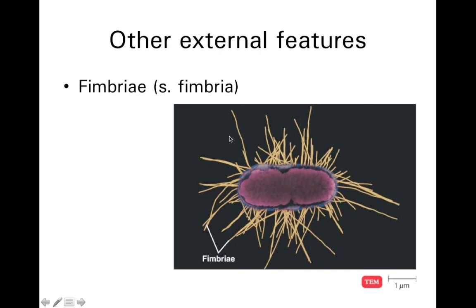Fimbriae comes from the Latin word that means fringe. Fimbriae look kind of like cilia or flagella, but they are not the same as cilia or flagella. Cilia are only found in eukaryotic cells, and flagella are different in their structure from fimbriae. These also can help a bacterium anchor itself to a substrate — either a host, a grain of sand if it's a soil bacterium, or clay.